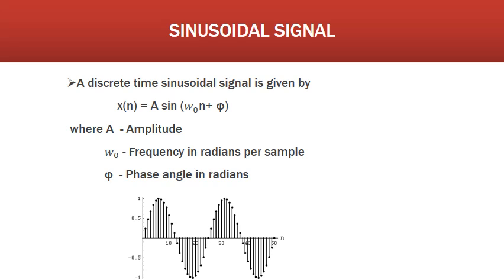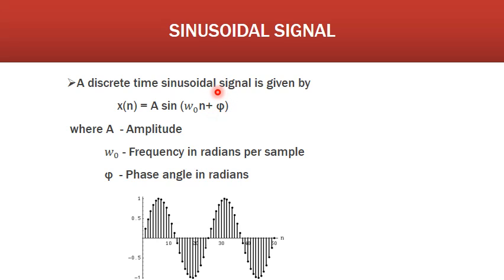Next is the discrete time sinusoidal signal, given by x(n) = A·sin(ω₀n + φ), where A represents the amplitude of the discrete time signal, ω₀ represents the frequency in radians per sample, and φ represents the phase angle in radians. A discrete time sinusoidal signal is shown in the figure.